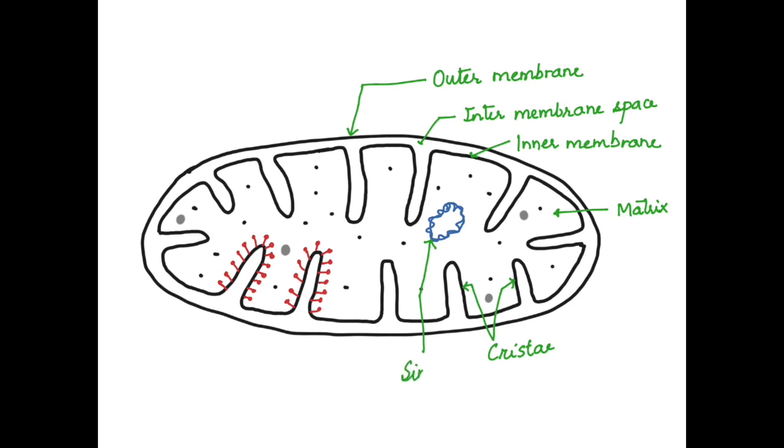Mitochondria contains DNA in the form of a single circular DNA, somewhat like the prokaryotic cell. These are the structures we had drawn on the folds, the cristae.